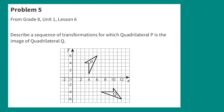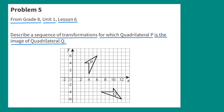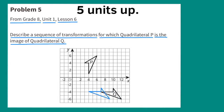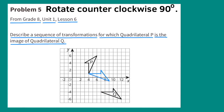Problem number five from 8th grade Unit 1 Lesson 6: Describe a sequence of transformations for which quadrilateral P is the image of quadrilateral Q. Translate Q three units left, five units up. Then rotate counterclockwise 90 degrees.